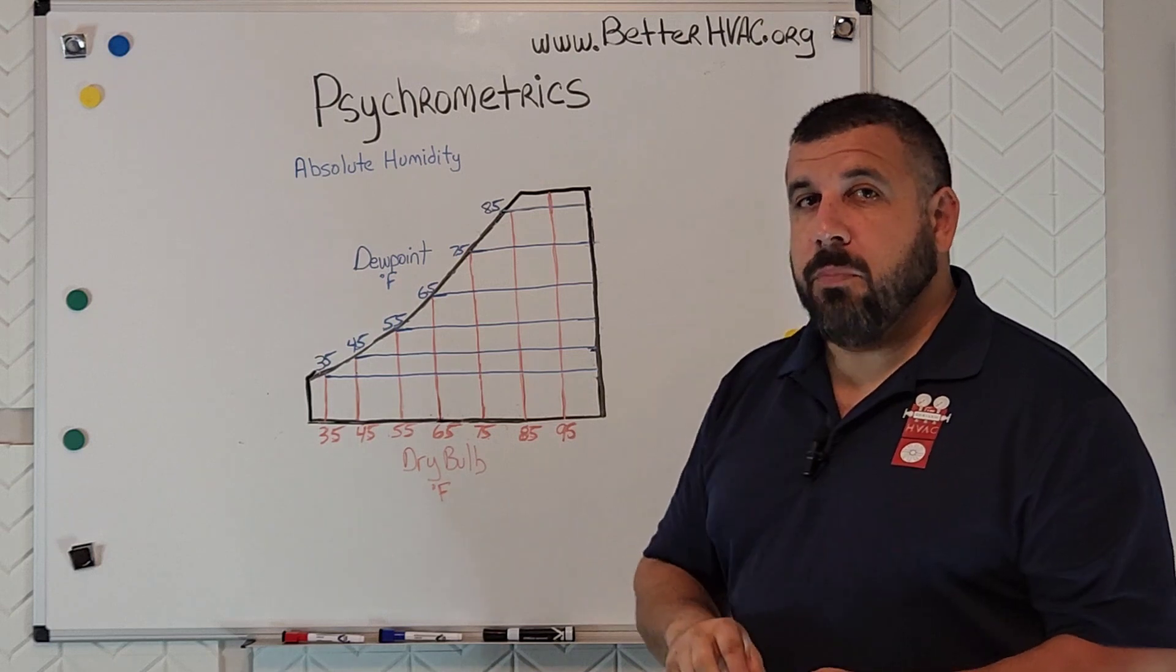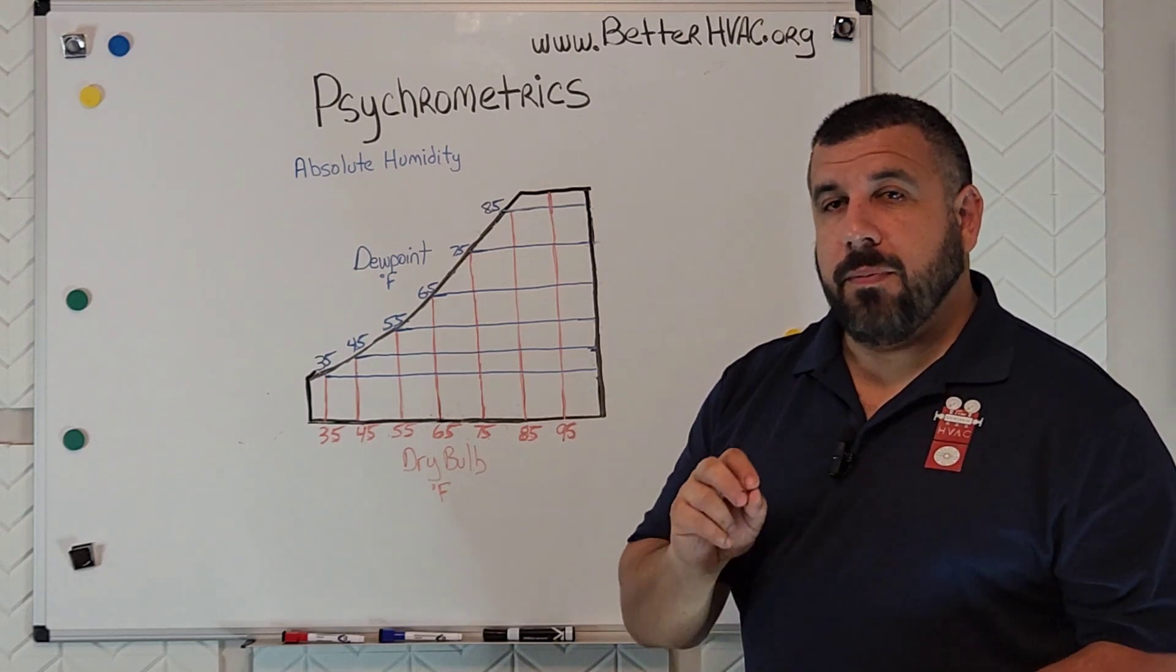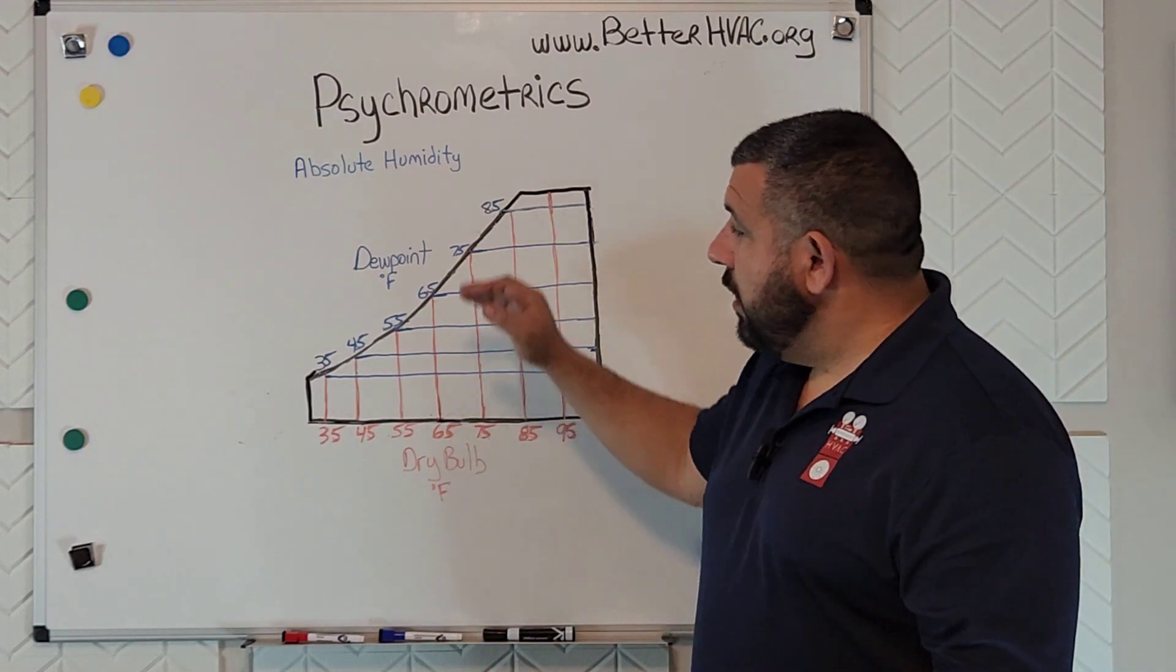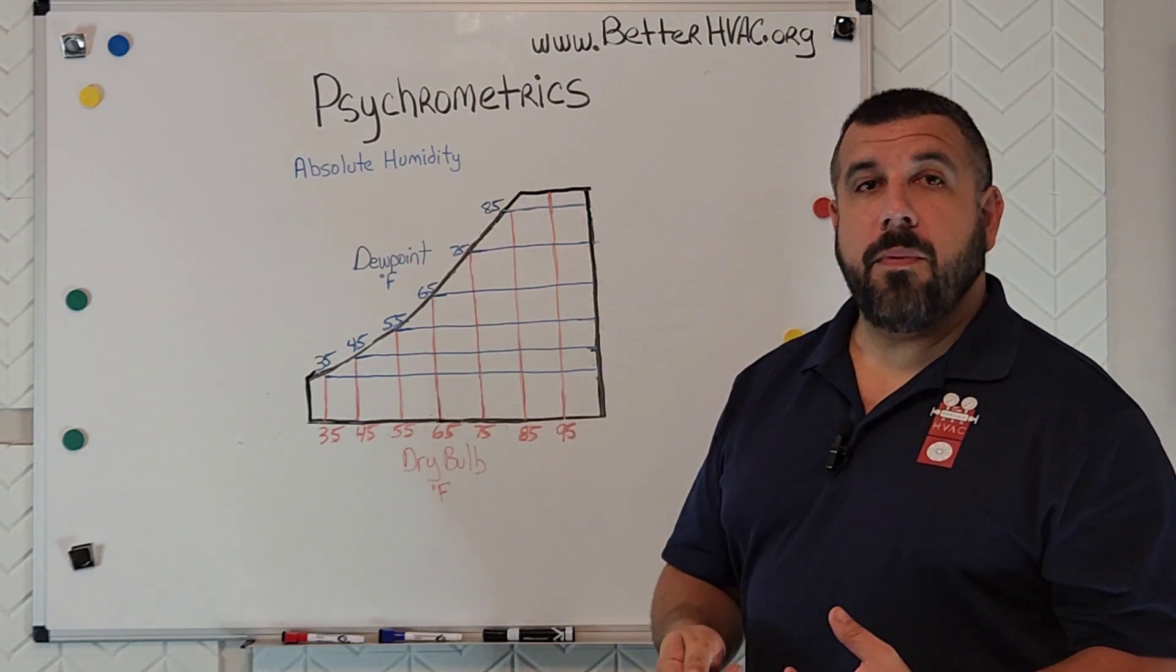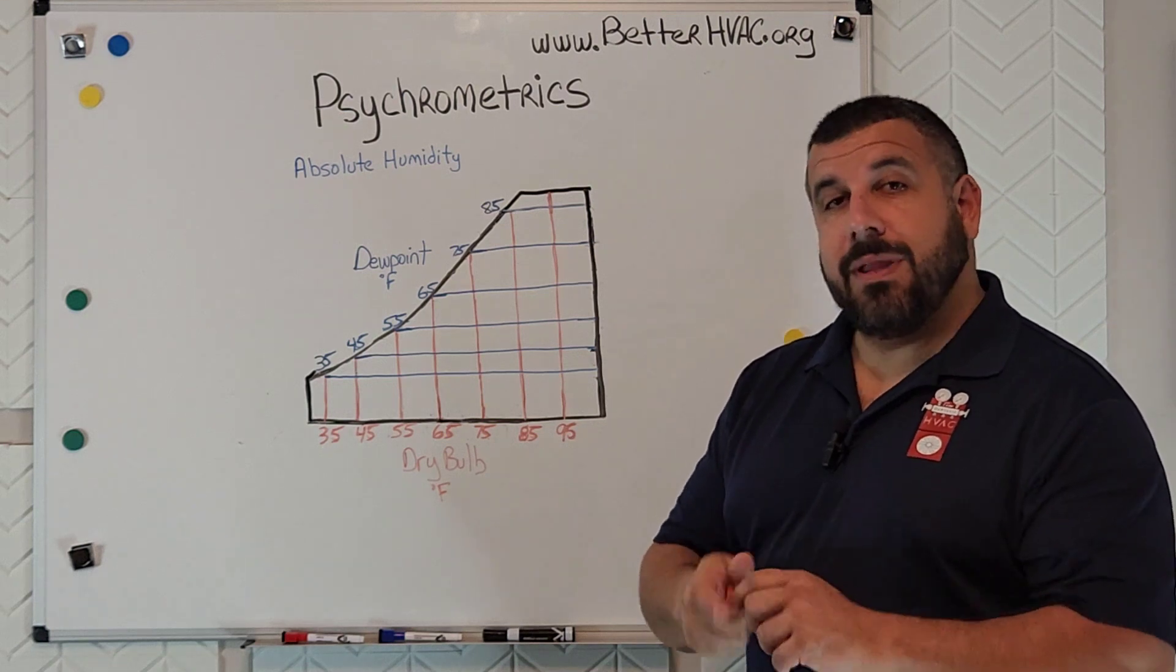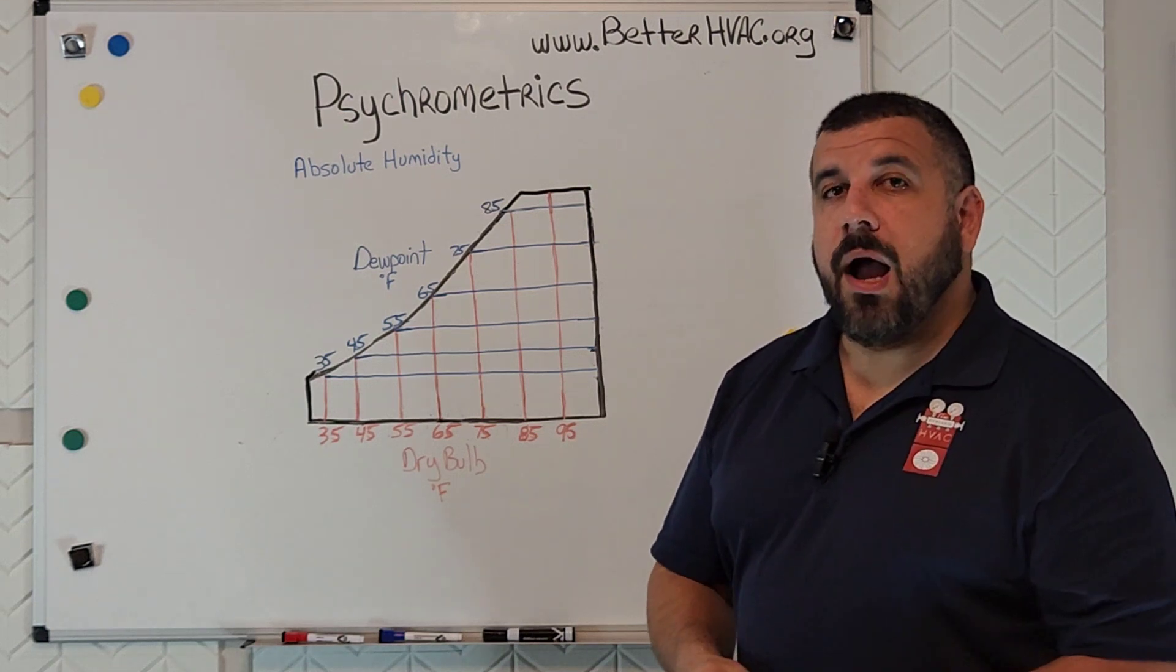So we're going to plot our very first point on the psychometric chart, because anytime you know two properties of the air, such as dry bulb temperature and dew point or another property, then where those two lines intersect, that is your operating point.